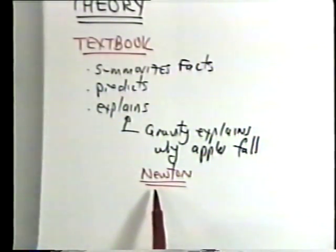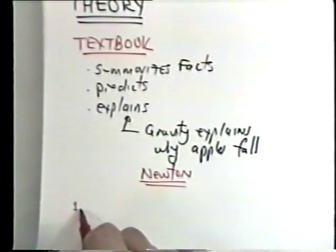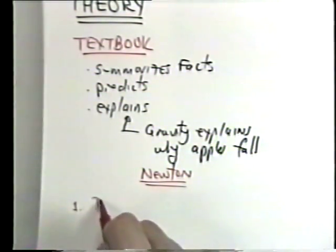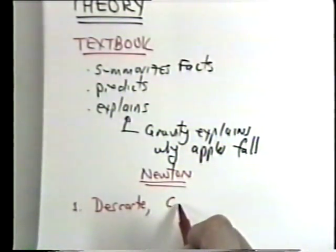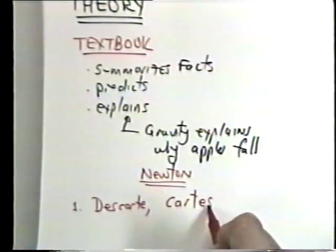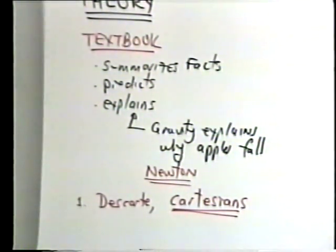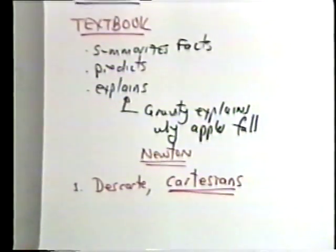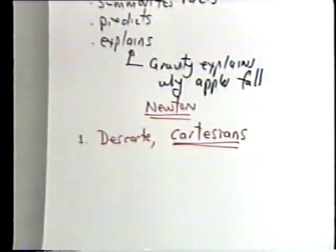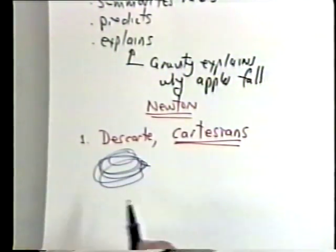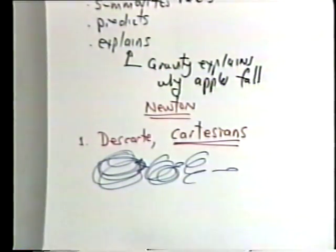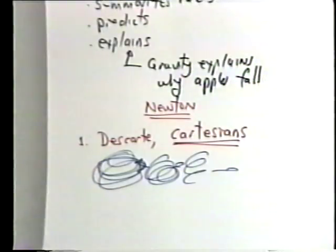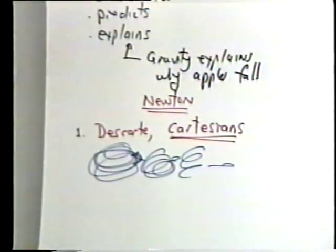Around this time there were two competing groups with ideas about gravity. One were the followers of Descartes — called Cartesians, which is also why we have Cartesian coordinates. These guys in France had a really great model for gravity: invisible vortices that rotated, causing one to twist the next, eventually producing a force. It was a very mechanistic model with nice woodcuts — very visual. Newton, on the other hand, had a very different approach.